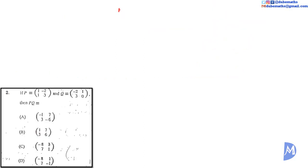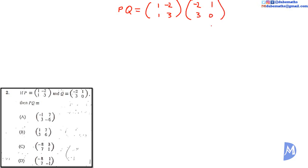Question 2. P multiplied by Q is equal to the matrix (1, -2; 1, 3) multiplied by (-2, 1; 3, 0). Matrix multiplication is done row by column. We multiply the first row by the first column to get the first row, first column of the answer.